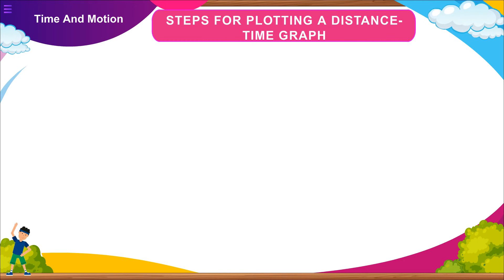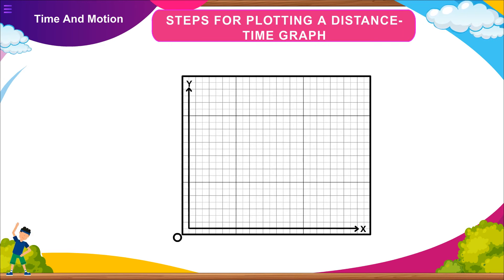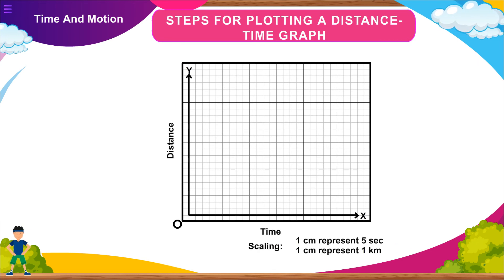Steps for plotting a distance-time graph: On a graph paper, draw two perpendicular lines OX and OY. Represent time along X axis and distance along Y axis. Decide the scale. Example: one centimeter equals five seconds, one centimeter equals one kilometer. Mark the points on the axis. Make dotted lines along the time and distance and let them meet at a point. Repeat it for a few observations. Now join all the points so formed in step five. You now have a graph which is called the distance-time graph.